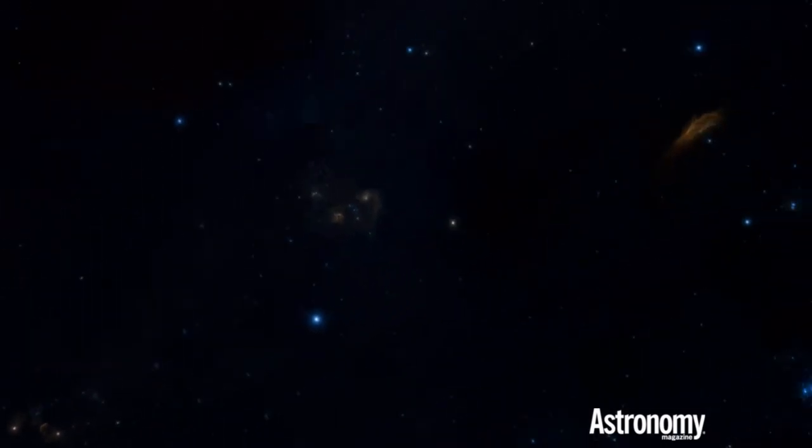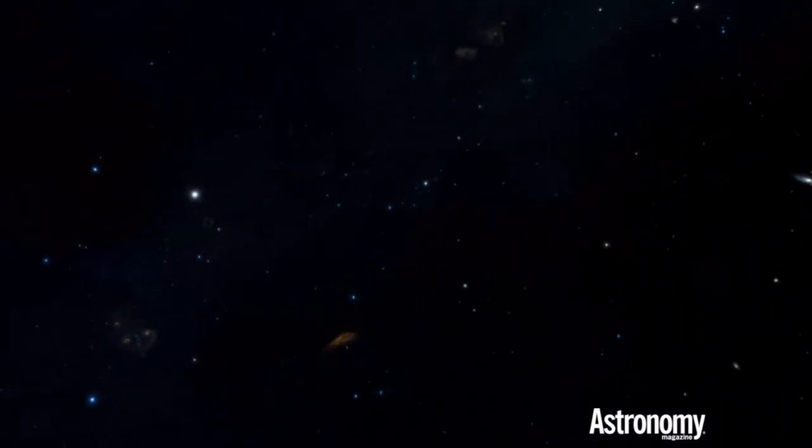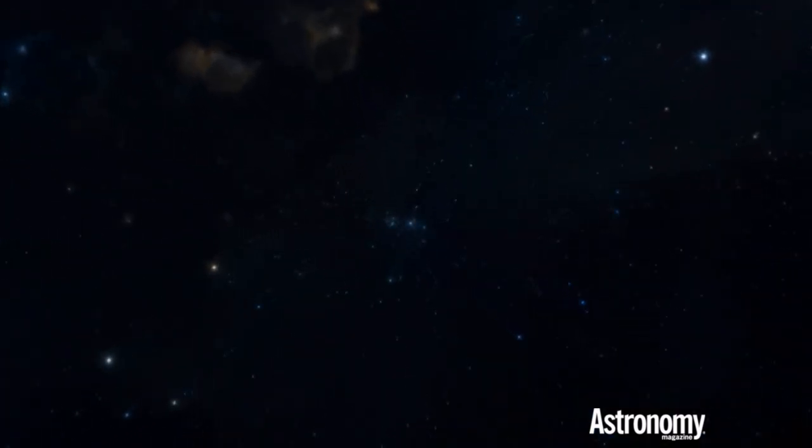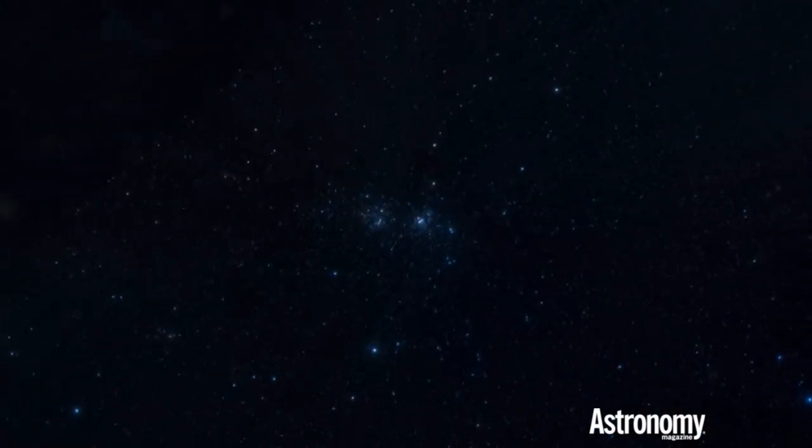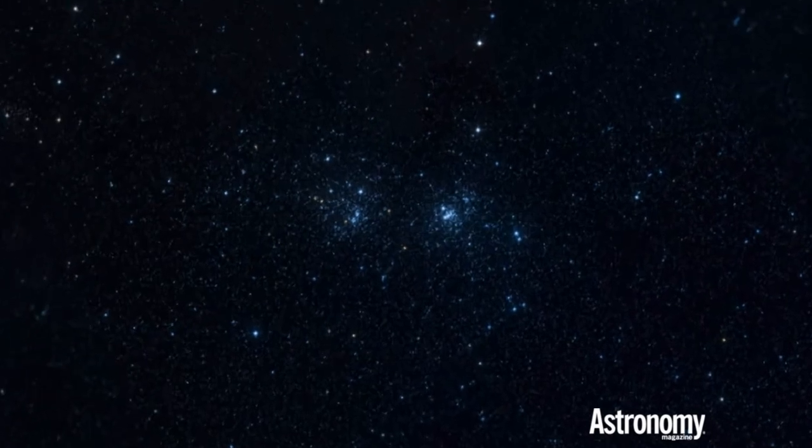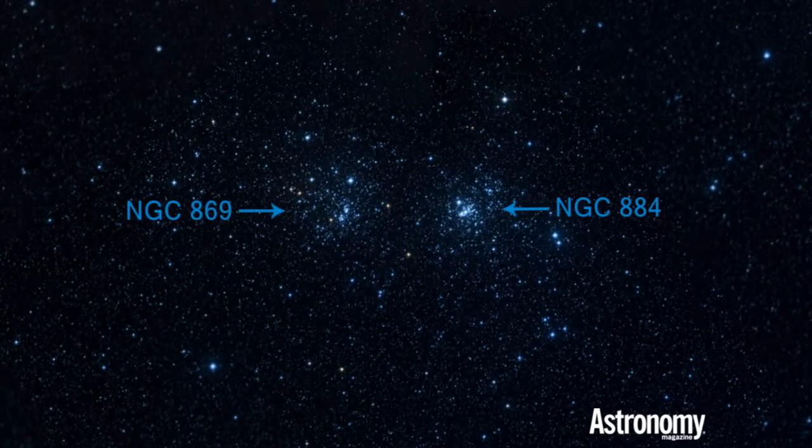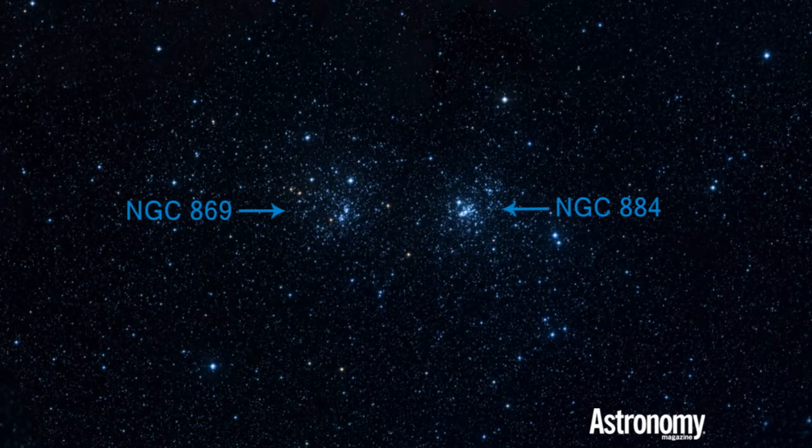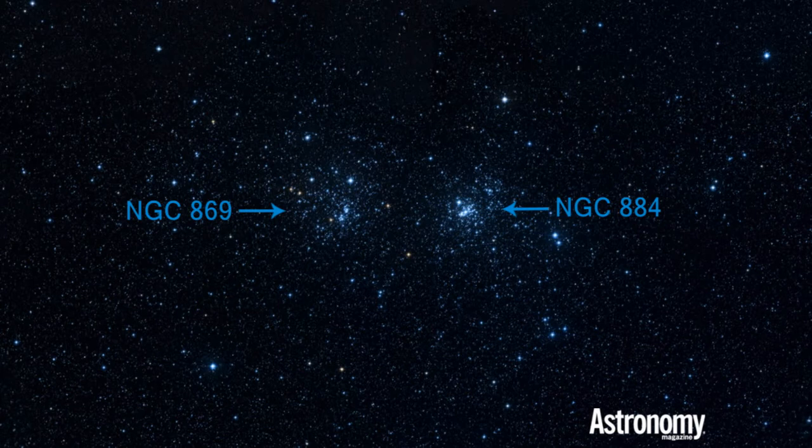Our next destination will feature not one, but two clusters in a compact region located just southeast of Cassiopeia the Queen and the constellation Perseus the Hero. Made up of NGC 869 and 884, the double cluster has been known since antiquity, and this duo still delights amateur astronomers today.